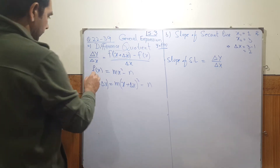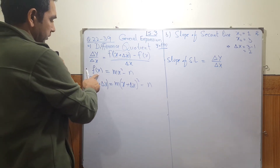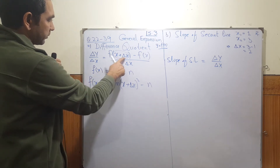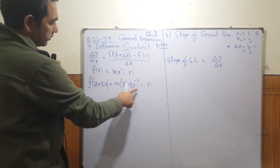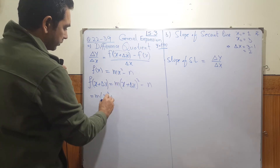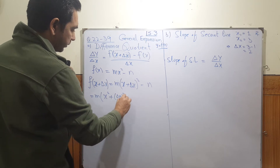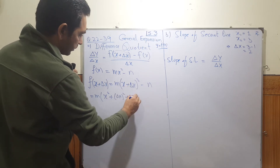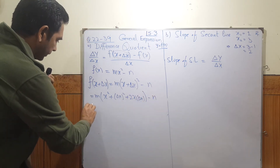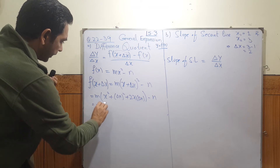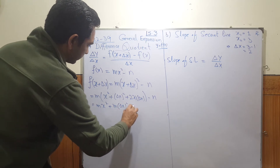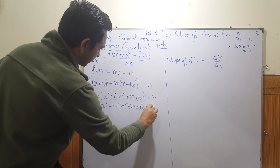In this question they're asking you to find the general expression for the difference quotient of f of x equals mx² minus n. We replace x by x plus delta x. We expand the square: x² plus delta x squared plus 2 times x times delta x, giving m times that expansion, and then minus n as it is. Multiplying m to each term gives m delta x squared plus 2mx delta x minus n.